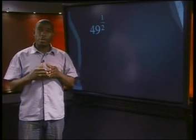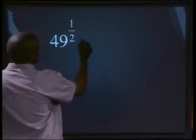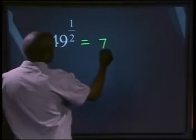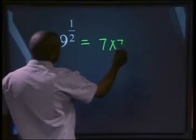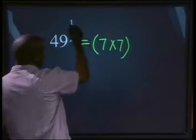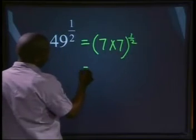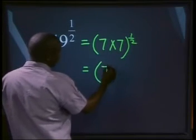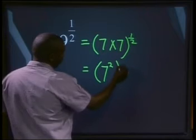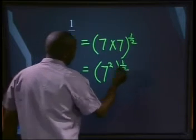Look at 49 to the power of 1 over 2. We know from the previous lesson that every number can be written as a product of prime numbers. Can you write 49 as a product of prime numbers? Let's factorize it. 49 can be written as 7 times 7. In this case, it will be all to the power of 1 over 2, which will be the same as 7 to the power of 2, all to the power of 1 over 2.